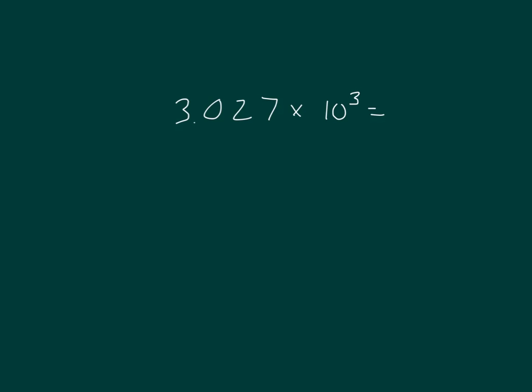3 and 27 thousandths times 10 to the third power. 10 to the third power is 1 thousand. So digits get shifted. That's over into the thousands place. So we have 3,027 as our answer.